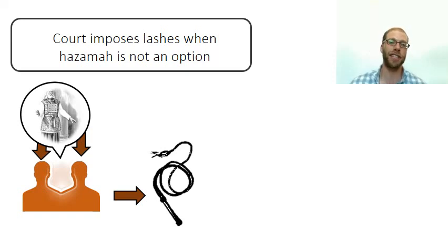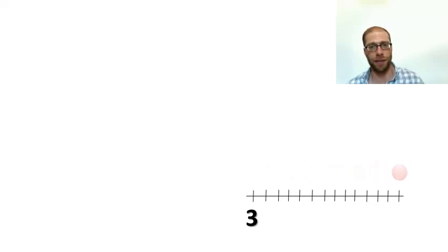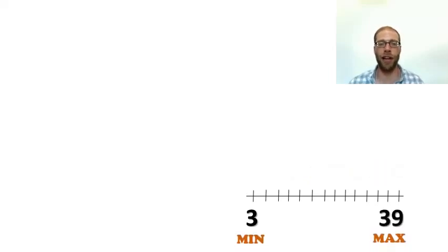In turn, they receive a consequence of Malkut, which the court hands out in multiples of three, anywhere from three on the low end of the range to 39 on the high end of the range.